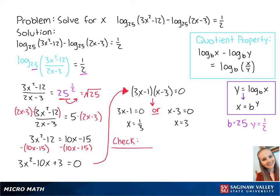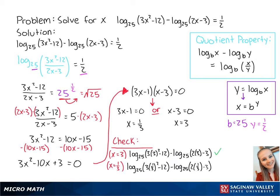Now we want to check for extraneous solutions. If we plug in x equals 3, we get positive logs, so this works. If we plug in x equals 1 third, we get negative logs, so this is an extraneous solution. Therefore, x equals 3 is the final answer.